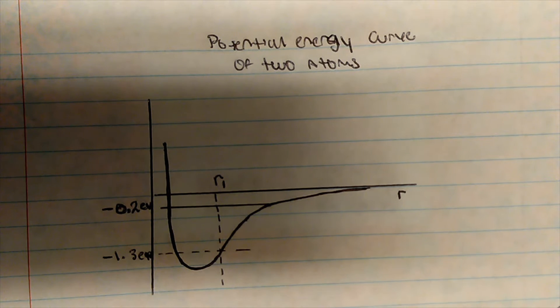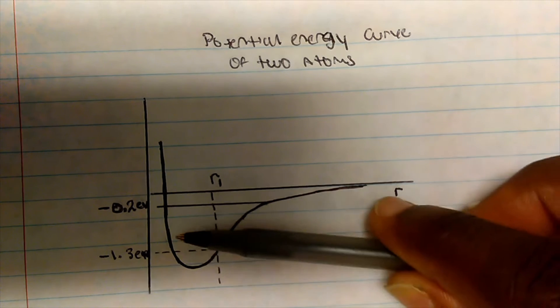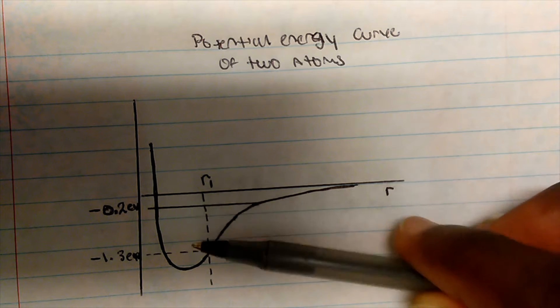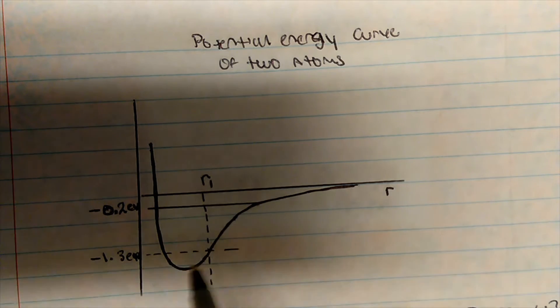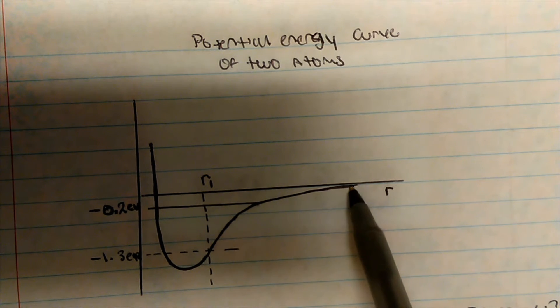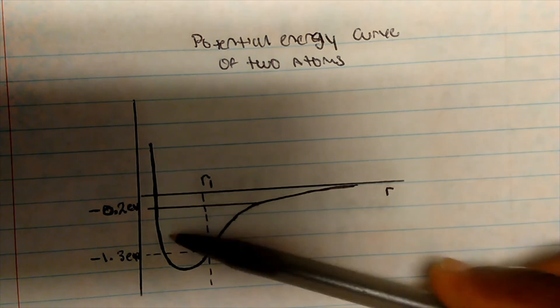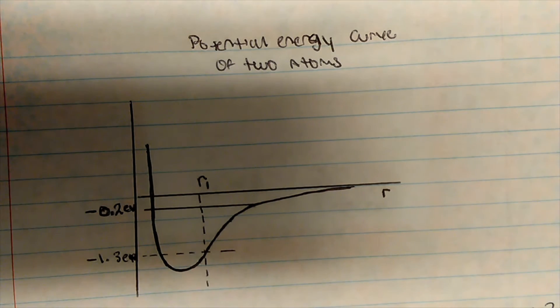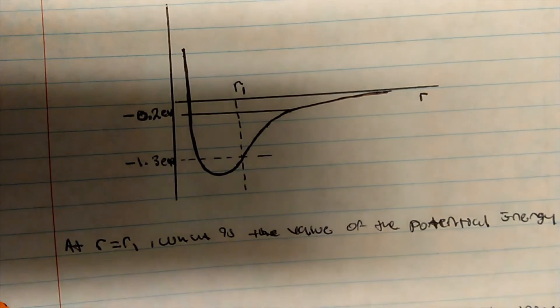When you look at a potential energy curve, this area between the top line and the bottom line is your kinetic energy. Your potential energy is the slope of this curve, so any given moment on this line is our potential energy. The kinetic energy is always in between.